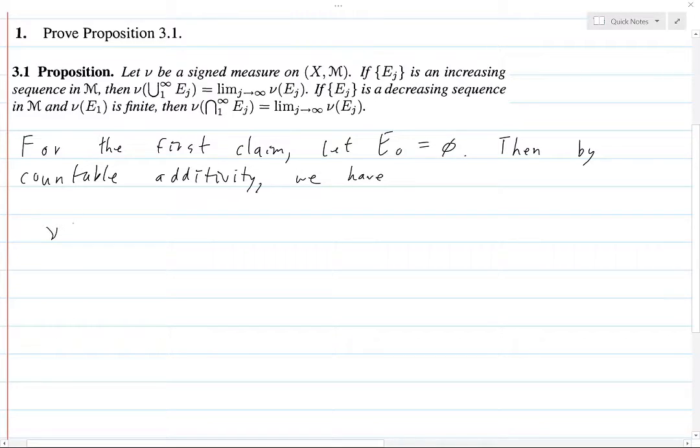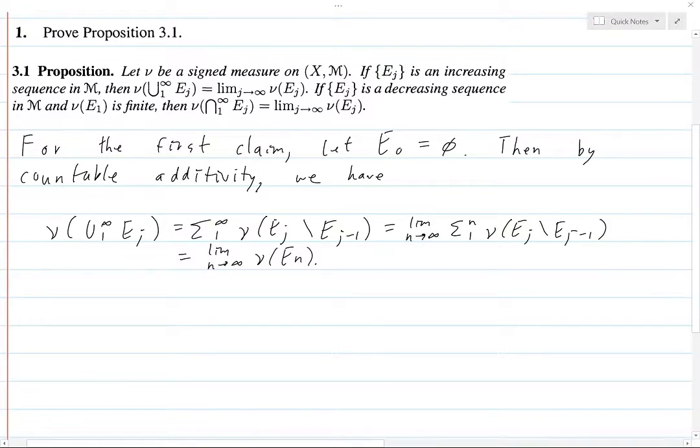We have nu of this union from 1 to infinity of EJ. This is equal to the sum from 1 to infinity of nu of EJ set minus EJ minus 1. And this is because all of these sets are going to be disjoint. And so now this is going to be the limit as n goes to infinity of the sum from 1 to n of nu of these guys. But then, this is just the limit as n goes to infinity of nu of EJ. Alright.